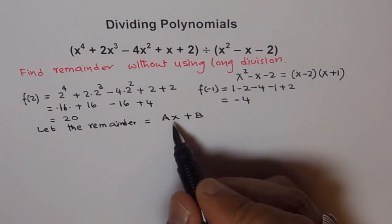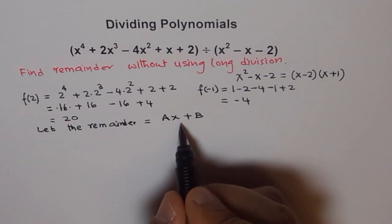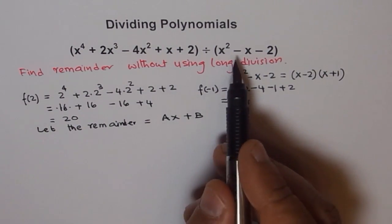So that is the remainder of degree 1. Does it make sense to you? Ax + B. If x is 0, it is a constant, but at least degree 1. If the remainder is this, and when we are dividing this by that, then, can I write the division statement?